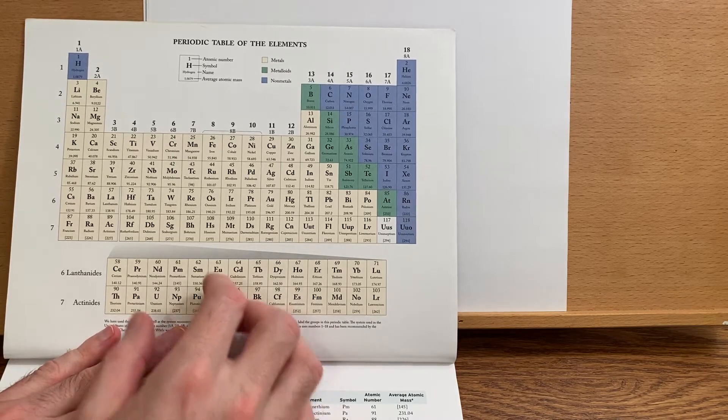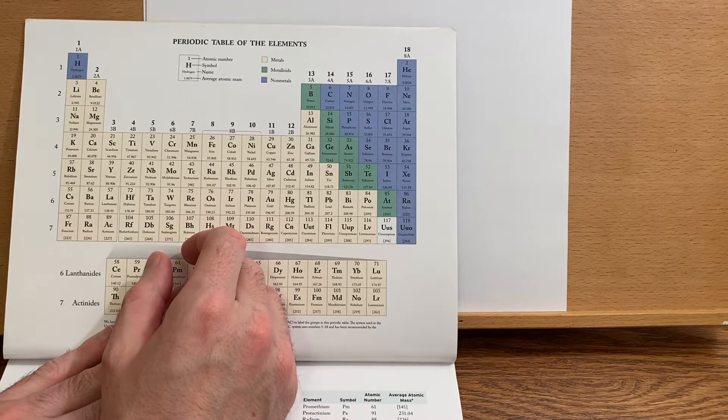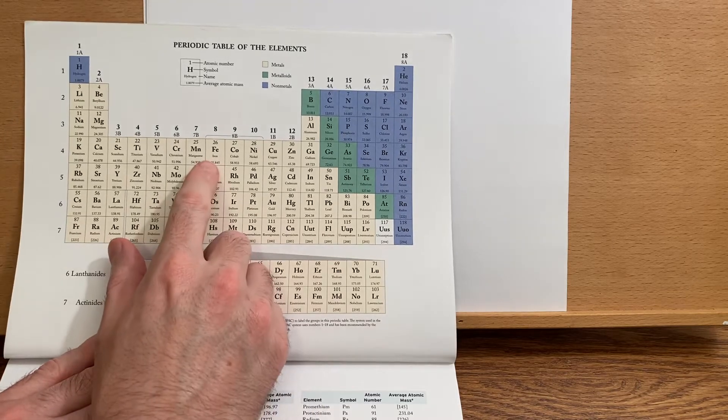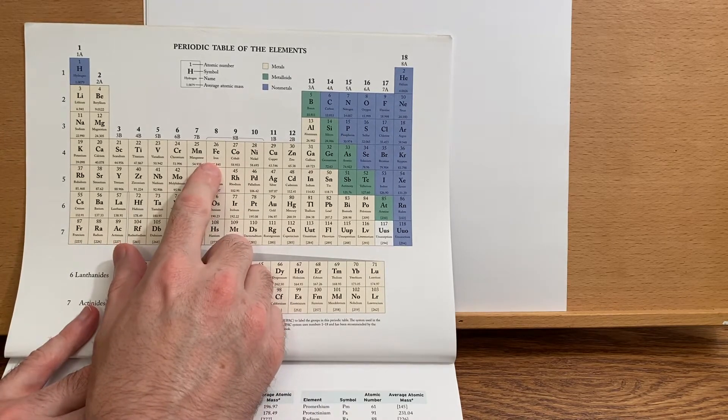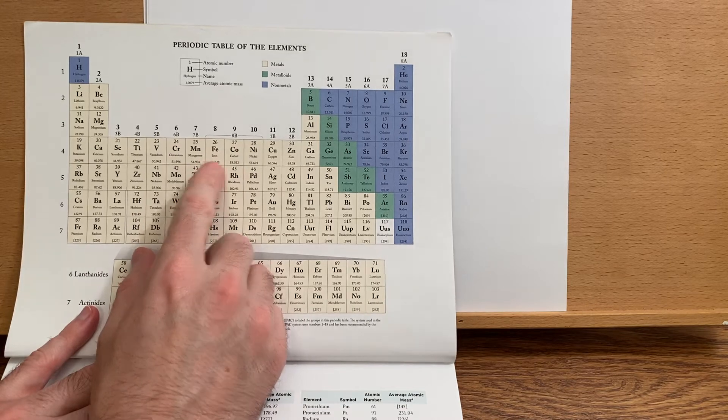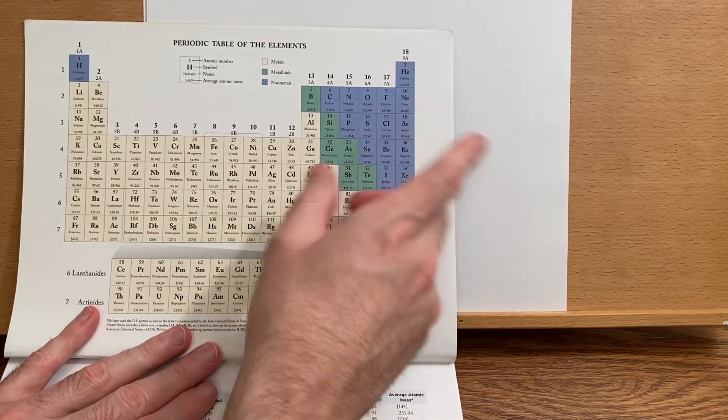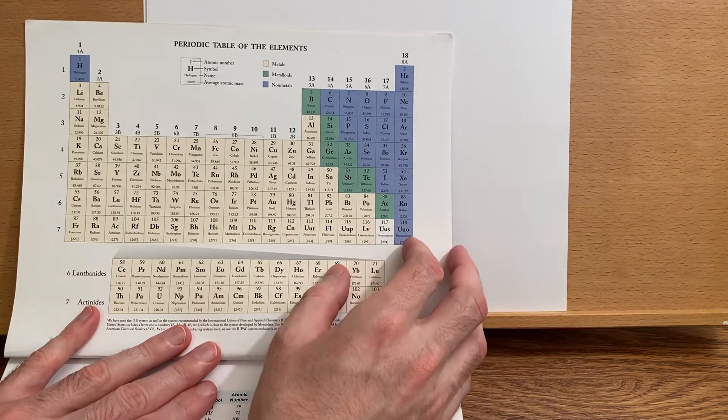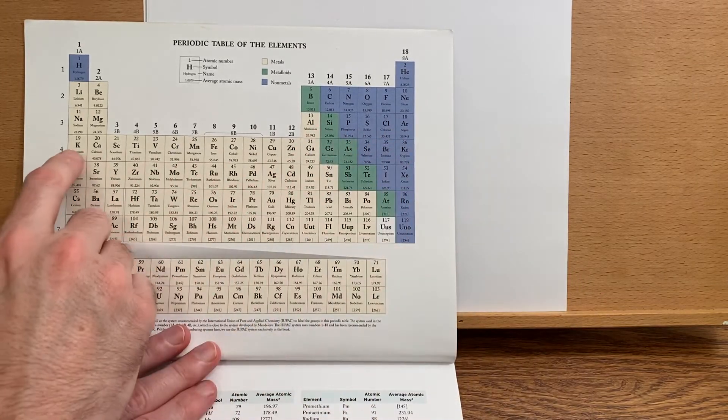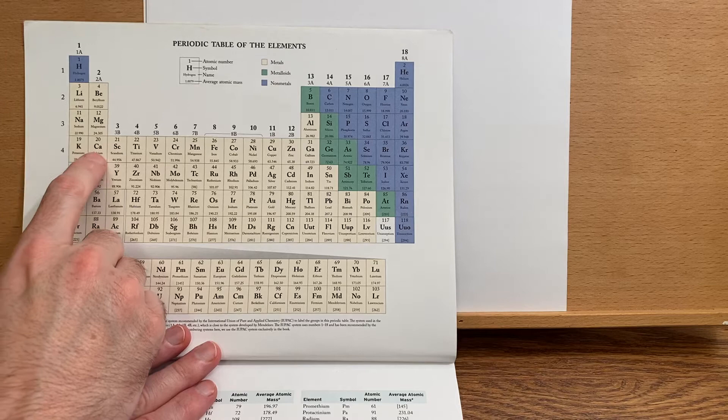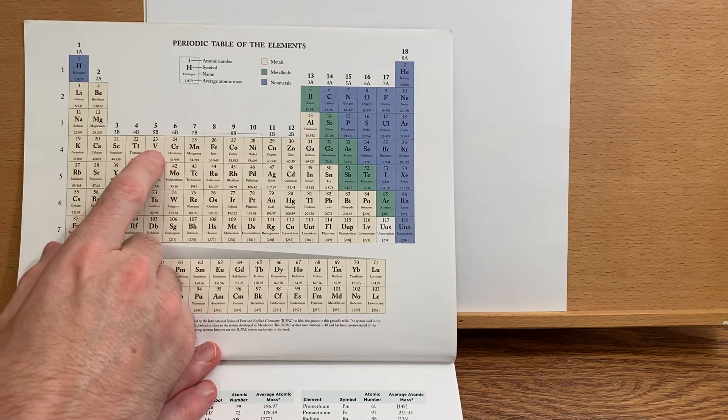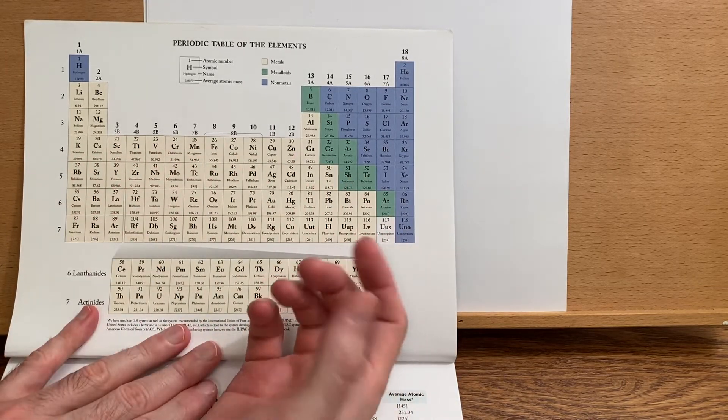So let's look at iron for example. When we start off, the electron configuration is argon - don't really care about the other things because those are not the valence electrons - but argon 4s2 and then 3d 1, 2, 3, 4, 5, 6, 3d6.